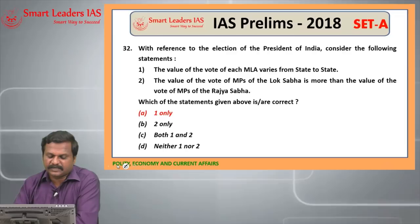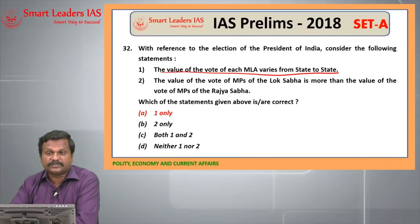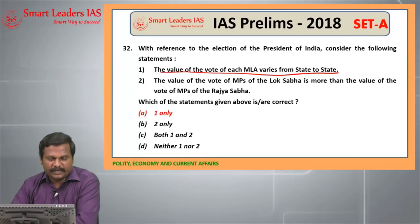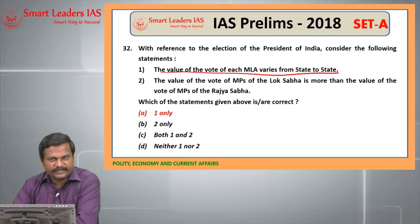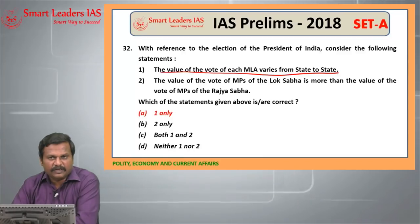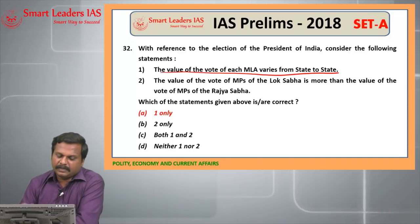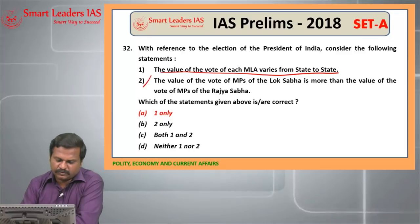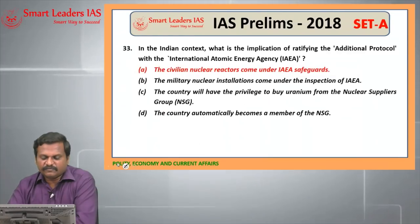32nd question: election of the President of India — the value of the vote of each MLA varies from state to state — yes, big population states will have MLAs whose vote value will be more than MLAs from smaller populated states. For example, a Sikkim MLA's vote will be less than an MLA's vote from UP. The value of a Lok Sabha MP and a Rajya Sabha MP will be the same; they are not different — so the second statement is a wrong statement. Hence the answer is A, 1 only.